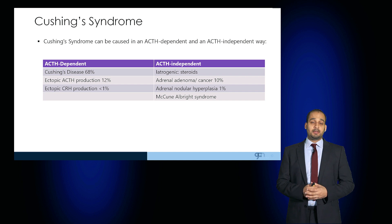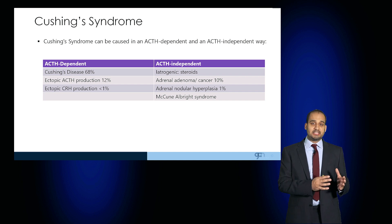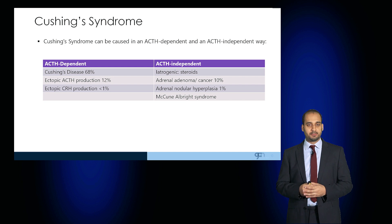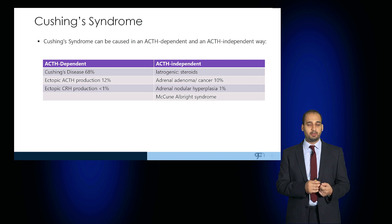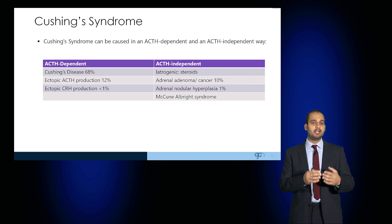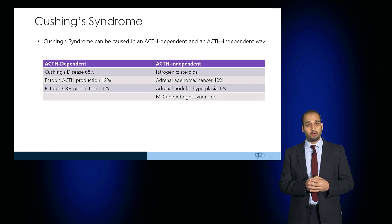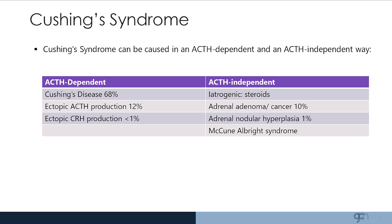Cushing's Syndrome can be caused by an ACTH dependent pathway or an ACTH independent pathway. The ACTH dependent pathway, which accounts for Cushing's disease, is where the adenohypophysis or the anterior pituitary is secreting excess levels of ACTH. Moreover, ectopic ACTH production from a tumour, or ectopic corticotrophin releasing hormone — which is a rare cause from the hypothalamus — may also cause this disease.